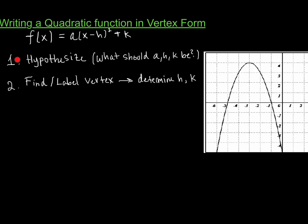We've already hypothesized what A, H, and K should be. To write and clearly define the function, I need to find the A, H, and K values — that's all I need. The easiest ones to figure out are the vertex points H and K. We'll find and label the vertex, which in this case is at the point negative 3, 4. So H equals negative 3 and K equals 4. Once I've determined them, I always want to input them into my function to see what I have so far.